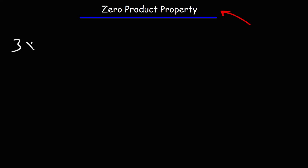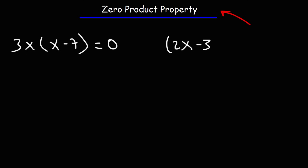For practice, go ahead and calculate the value of X for these two equations. The first one is 3x times (x minus 7) equals zero. The second one is (2x minus 3) times (3x minus 5) equals zero. Use the zero product property to calculate the value of X for each.